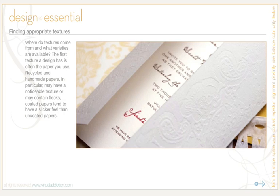Finding appropriate textures — tactile variety. You have to consider where textures come from and what varieties are actually available. The first texture a design has is often the paper you use. Recycled and handmade papers in particular may have a noticeable texture or may contain flecks, like coated papers tend to have a slicker feel than uncoated papers.